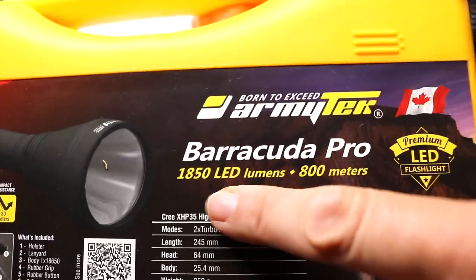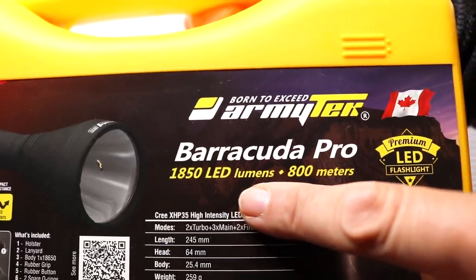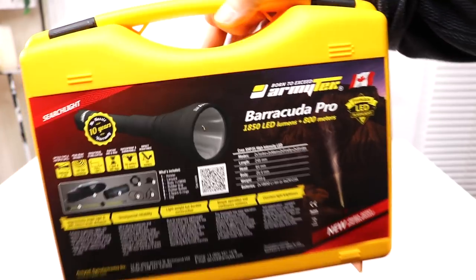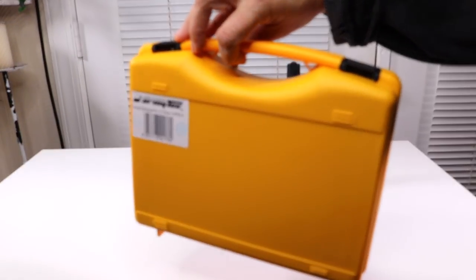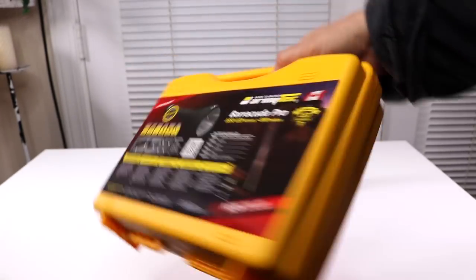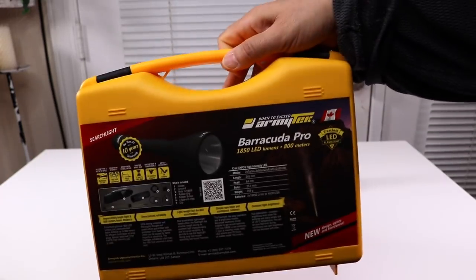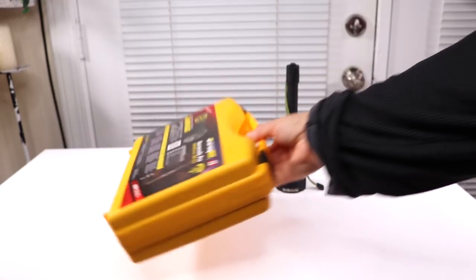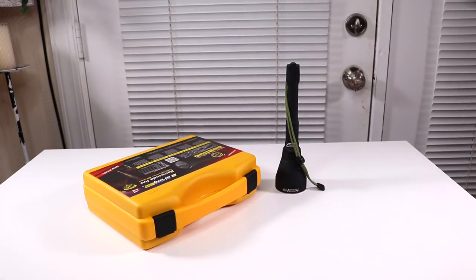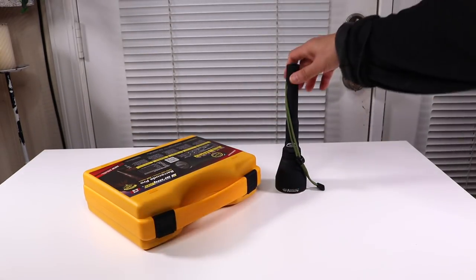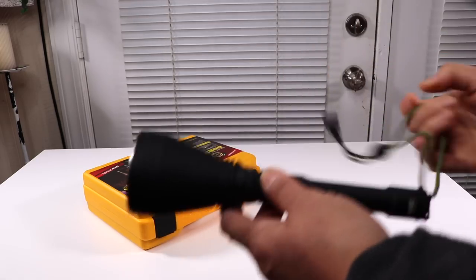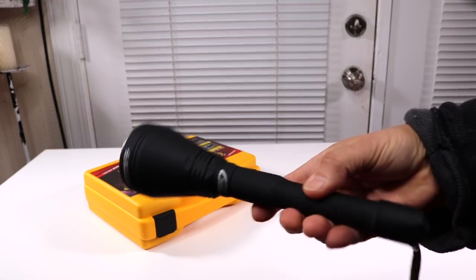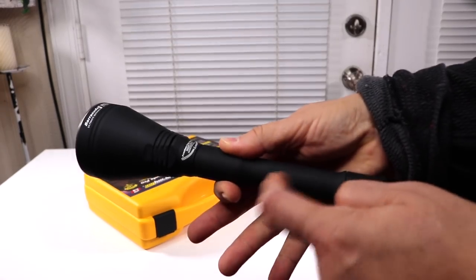There are the specs on it: 1850 lumens, 800 meters. It comes in a really nice plastic case that you can keep it in. Let's go ahead and start with the flashlight. Very nice, this is super heavy-duty, comfortable in the hand.